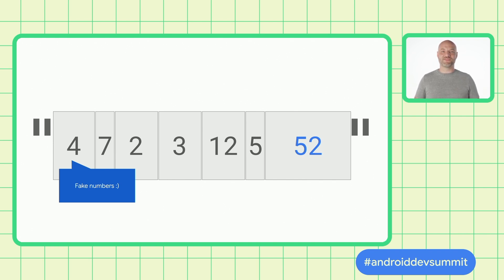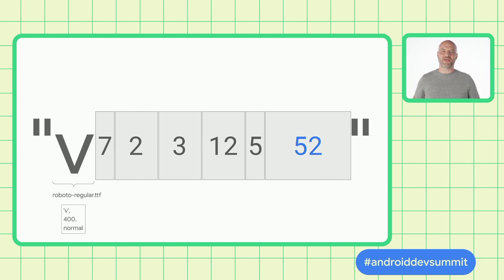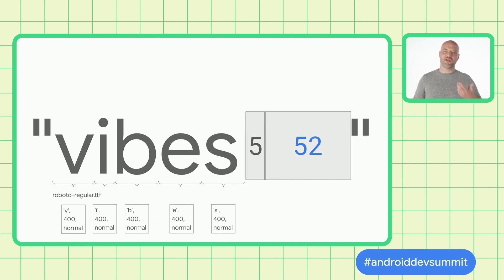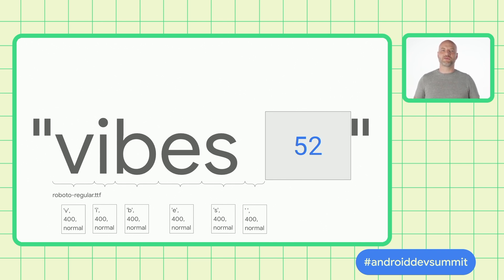What happens when you try to render a string on Android? Put simply, as a first step, the platform has to figure out the best font for each character. The inputs are the code point as well as any font styling requested by your app. The default font for a character at normal weight, non-italic, on Android is roboto-regular.ttf. Android iterates through the string, checking each character and finding the best font — checking the code point and any styling. You can mix and match the same string, making some characters bold, and so on.